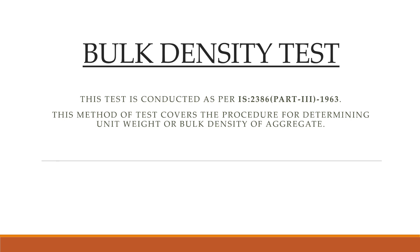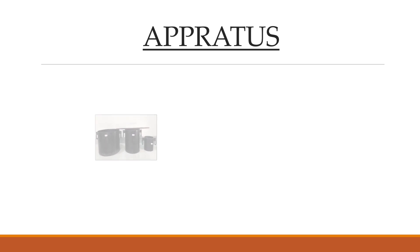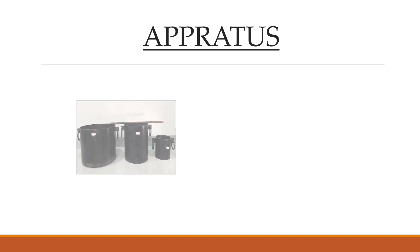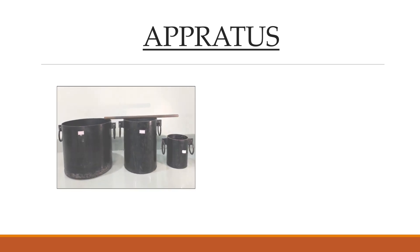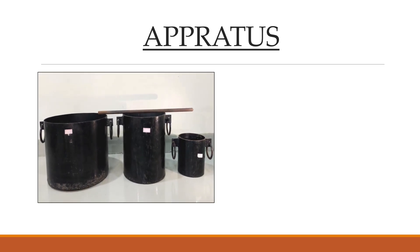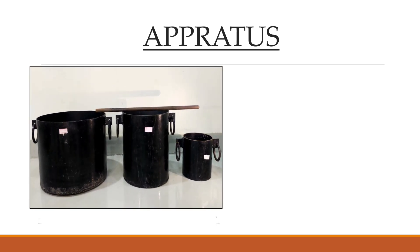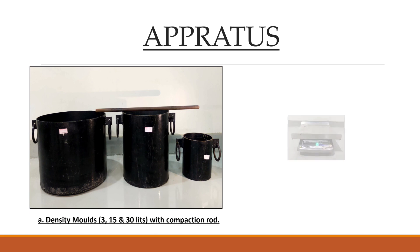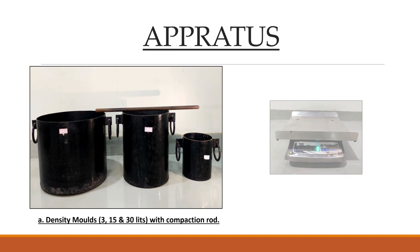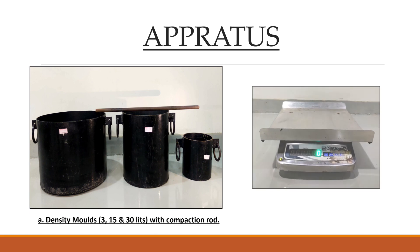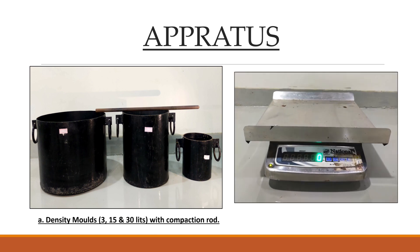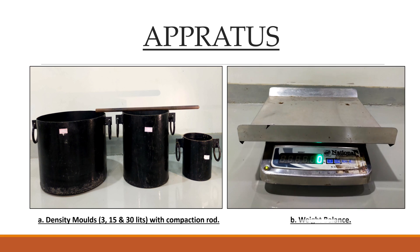The apparatus used in this test includes metal containers of 3-liter, 15-liter, and 30-liter capacities, a metal tamping rod of 16 millimeters diameter and 60 centimeters long rounded at one end, and a weight balance.